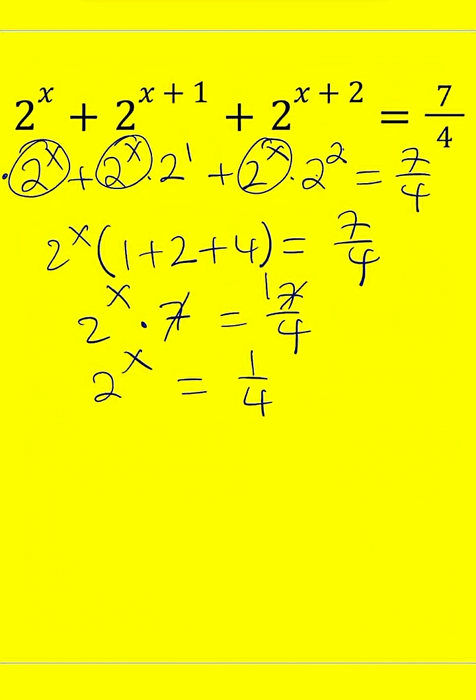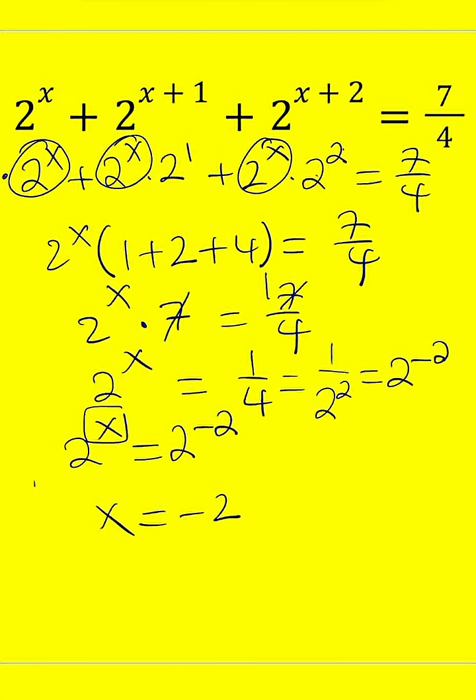How do you write 1 fourth as a power of 2? If you said 1 over 2 squared, or 2 to the power of negative 2, you got it. So 2 to the x can be written as 2 to the power of negative 2, which means x is equal to negative 2, and that is the only answer.